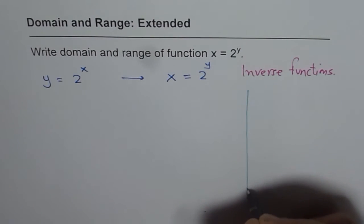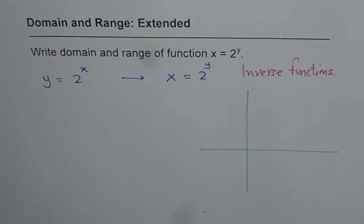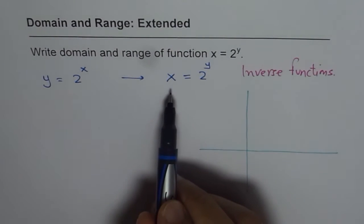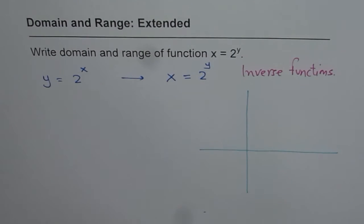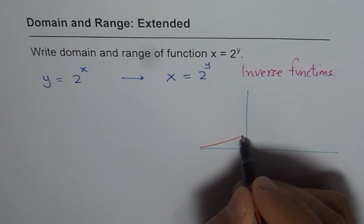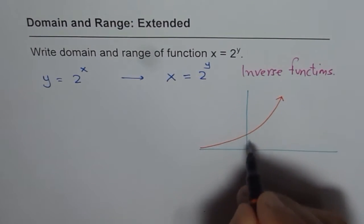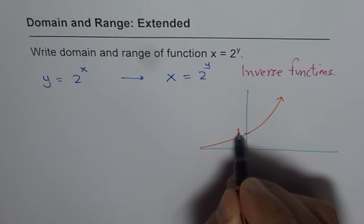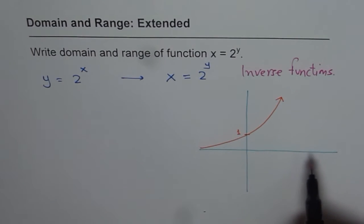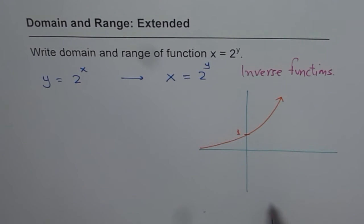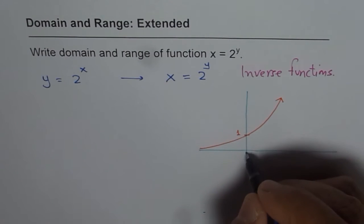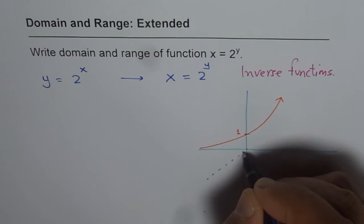Before getting into the answer, let me sketch. I'd like you to pause the video, sketch, and write the answer. Let me first sketch the function y equals 2 to the power of x. It is an exponential function which approaches 0 as x approaches negative infinity, crosses the y-axis at 1, and approaches infinity as x approaches positive infinity.